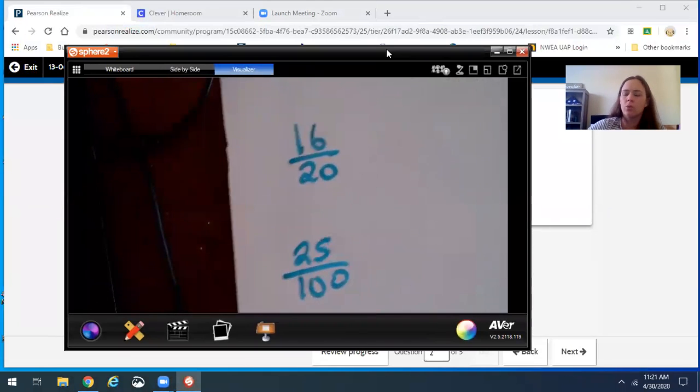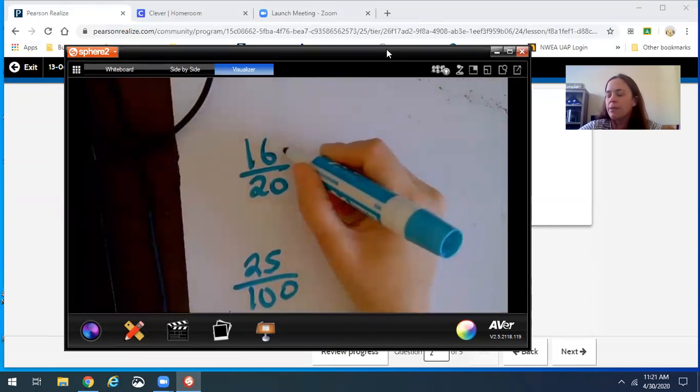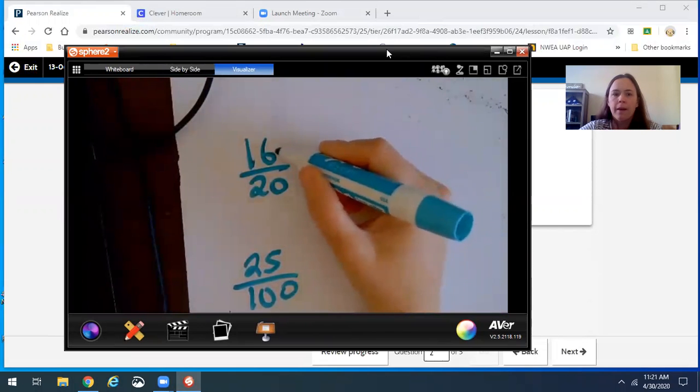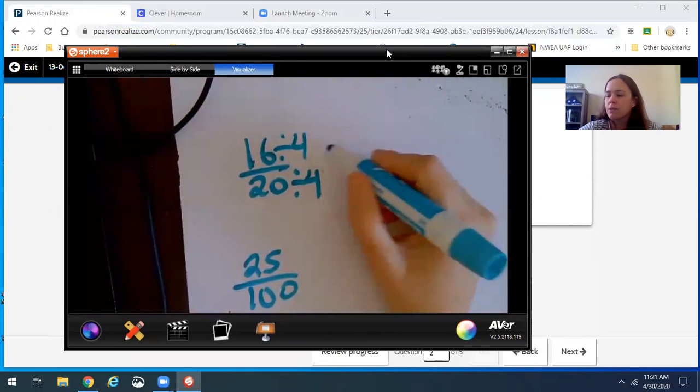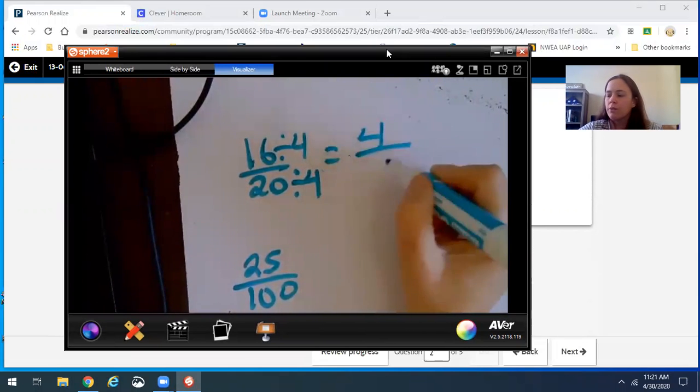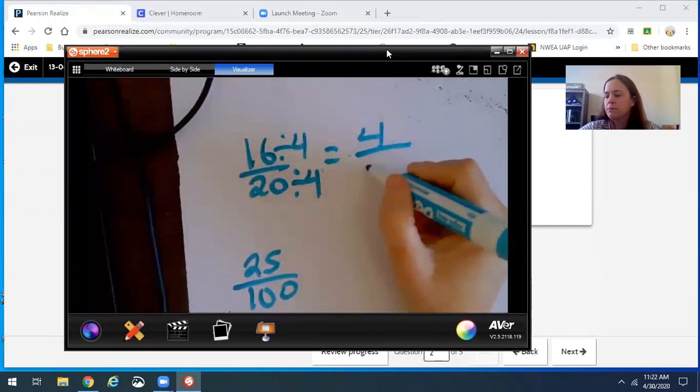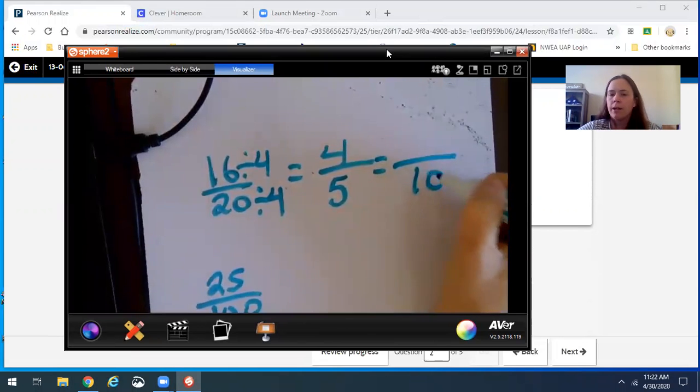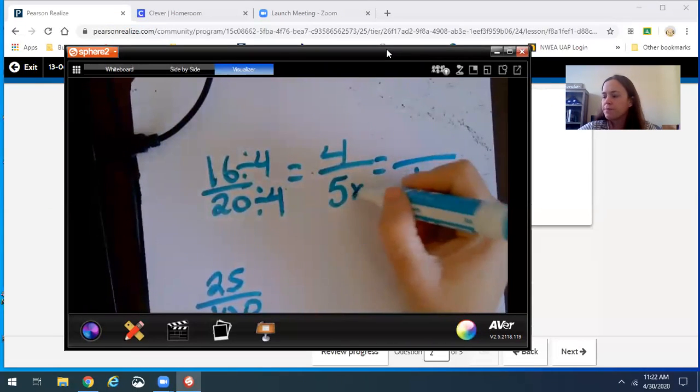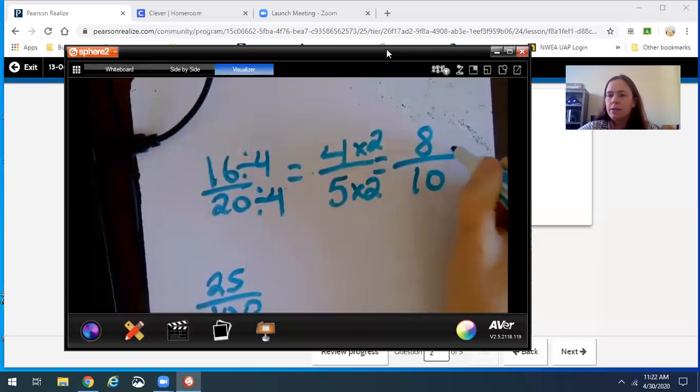So the first part, 16 twentieths, I would, since I don't want to do lots of multiplication, I would do the same thing. I would put this in simplest form. I know that 16 divided by 4 goes into 20 as well. 16 divided by 4 is 4, 20 divided by 4 is 5. Then you want a 10 on the bottom, or 100 always, so that you can make it into a decimal. 5 times 2 is 10, 4 times 2 is 8, so that's 8 tenths, so that would look like this, or .80.